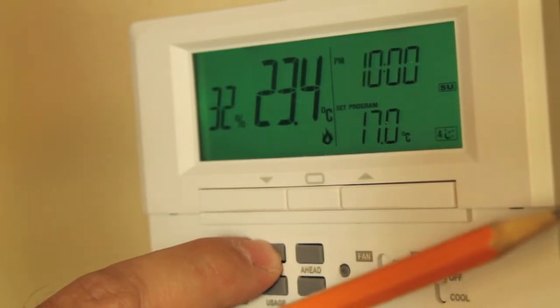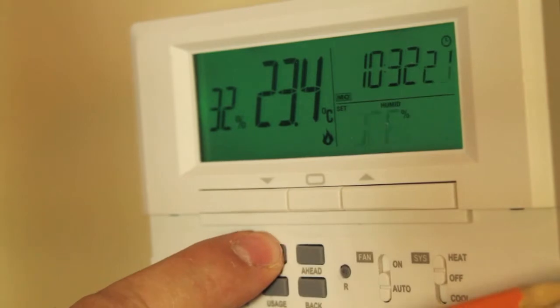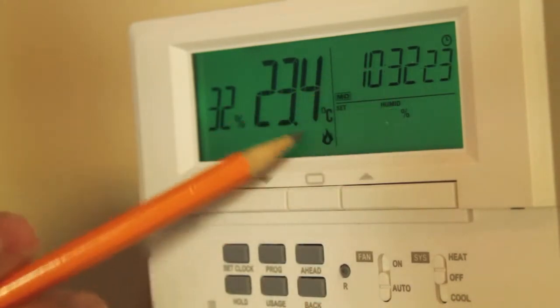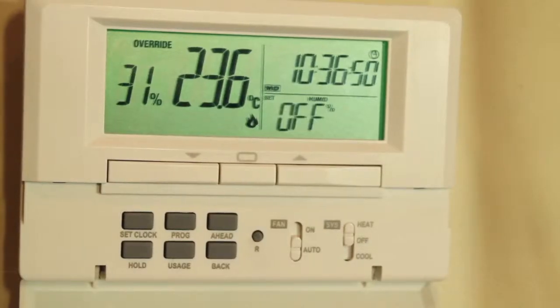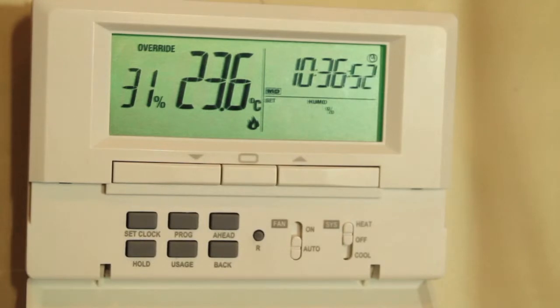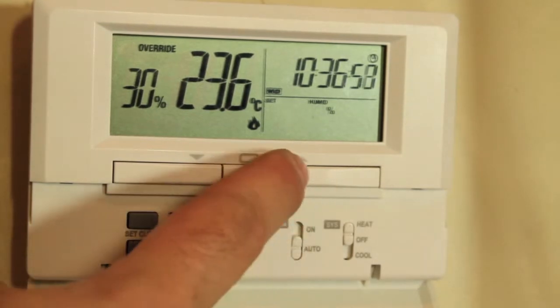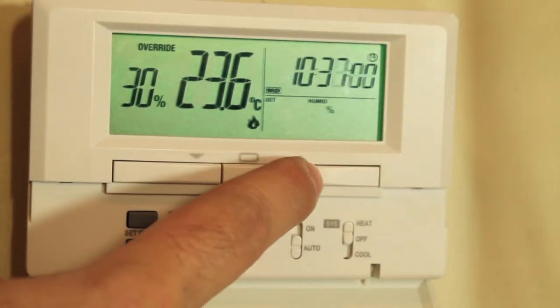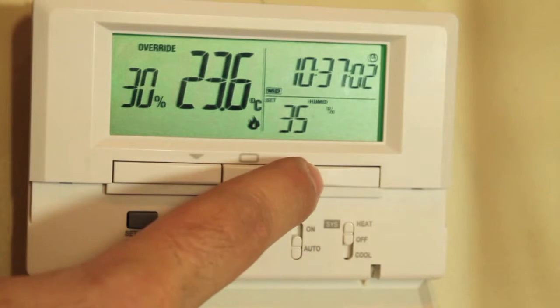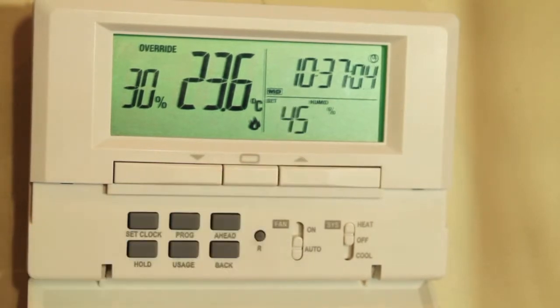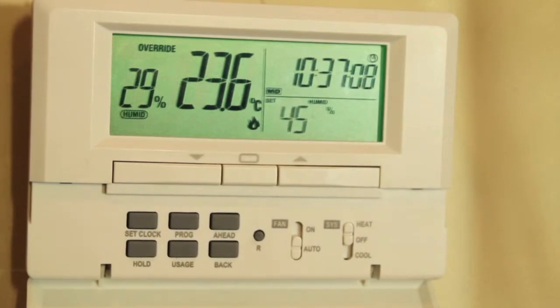After program four for Sunday you will then see the word off. This word off represents the humidity setting for your humidifier. It will only show if you're on the heating setting. By pushing the up arrow button you can change the percentage humidity you want for your home. This will only have an effect if you have attached humidifier wires to the H1 and H2 during installation.